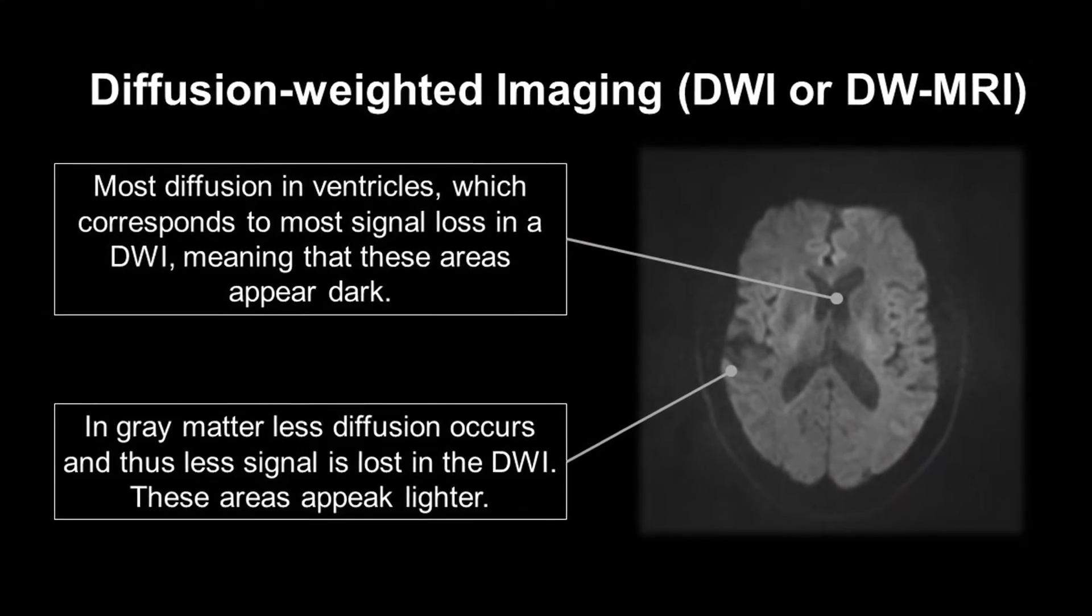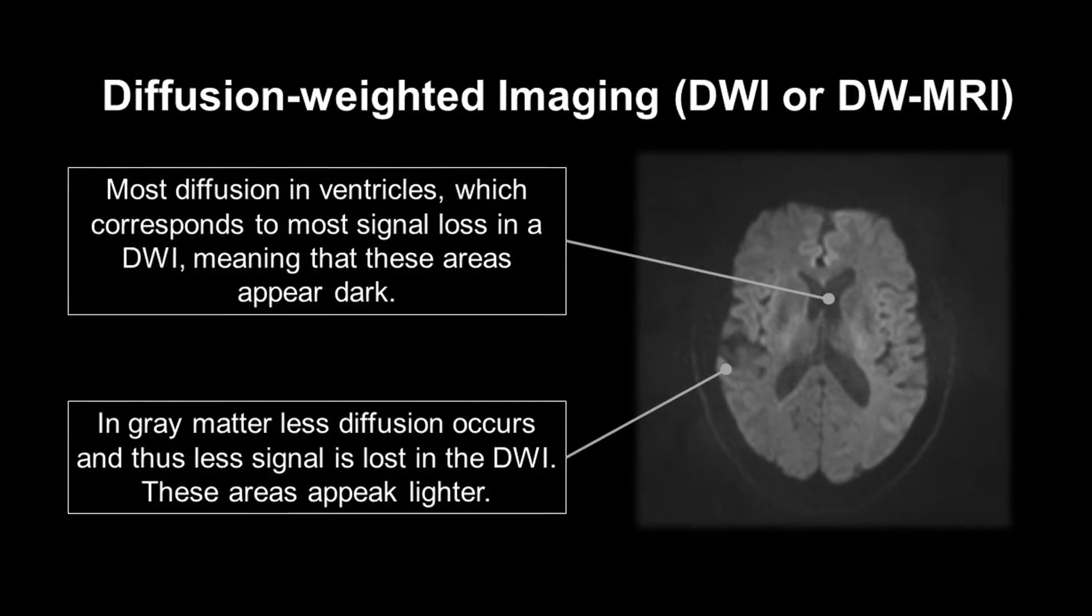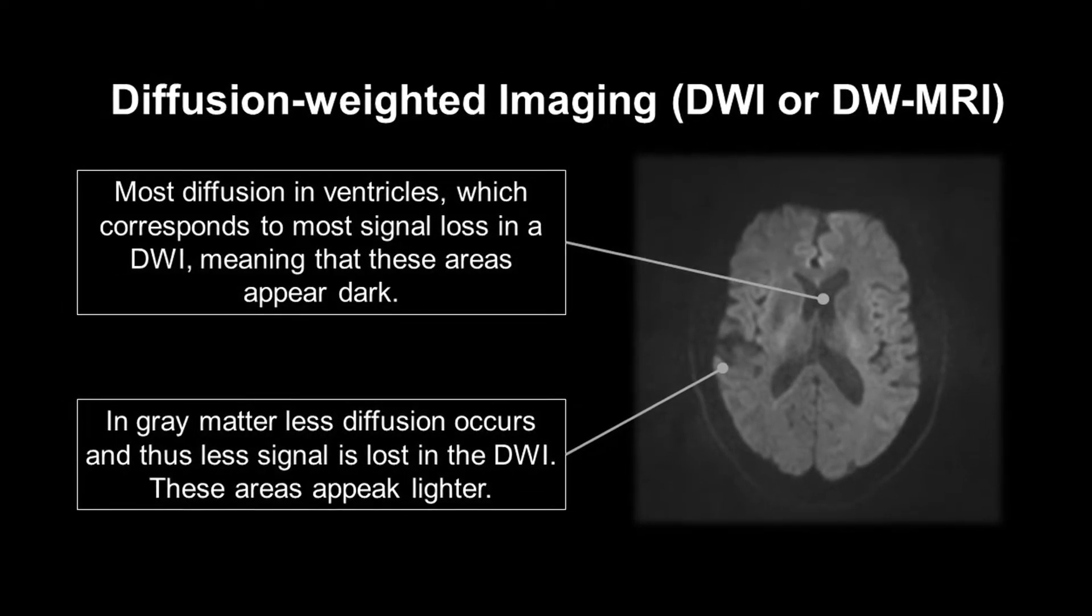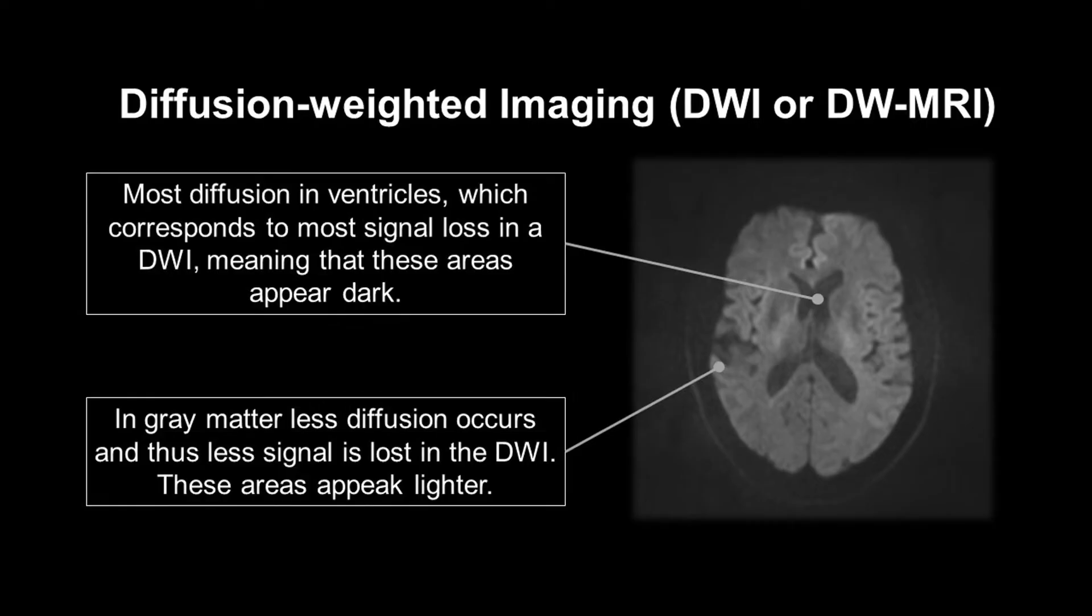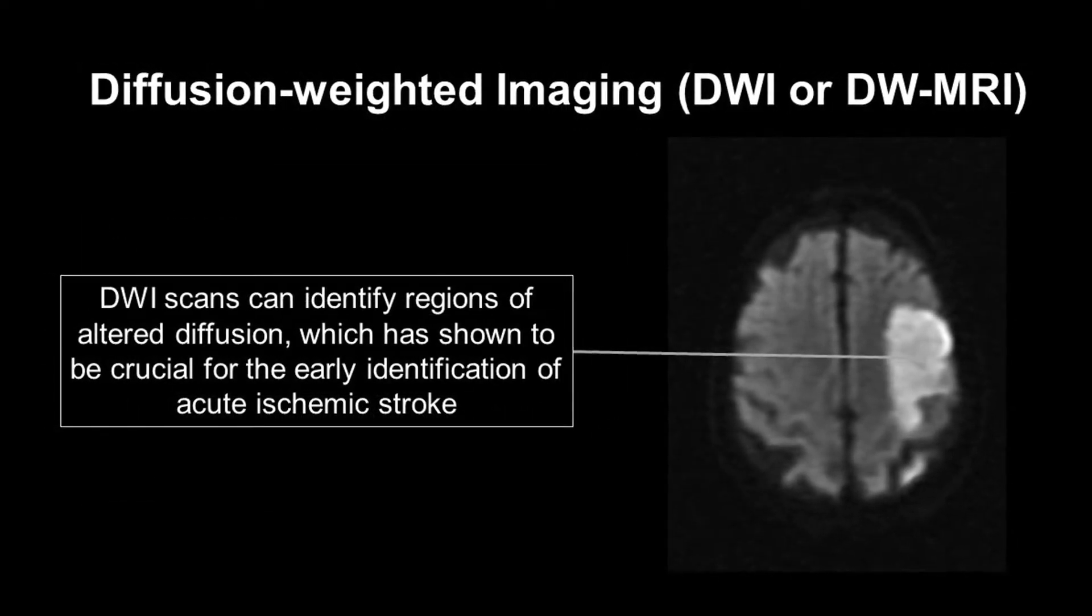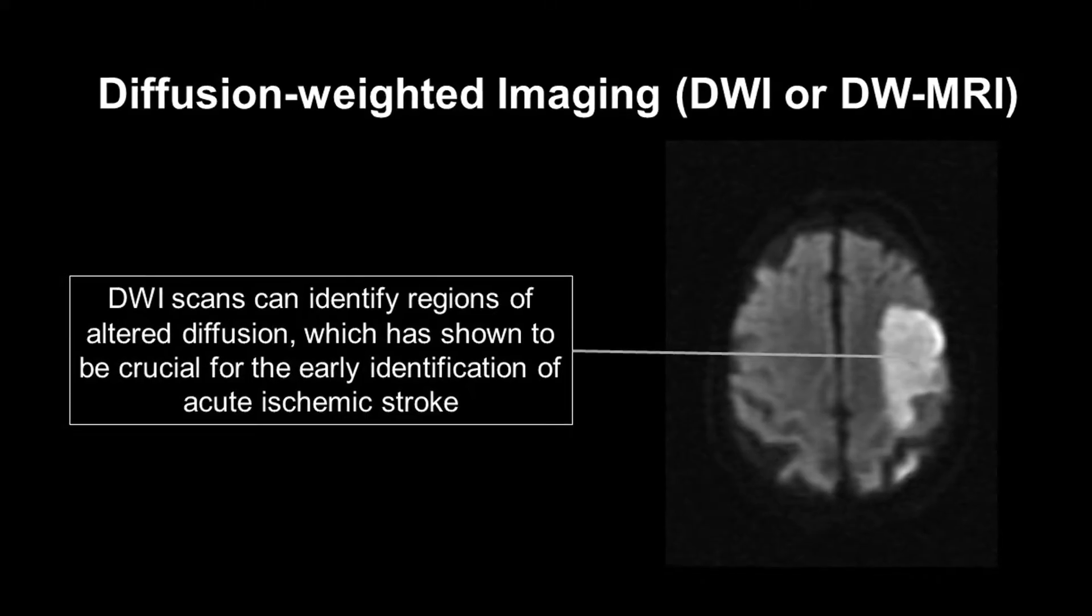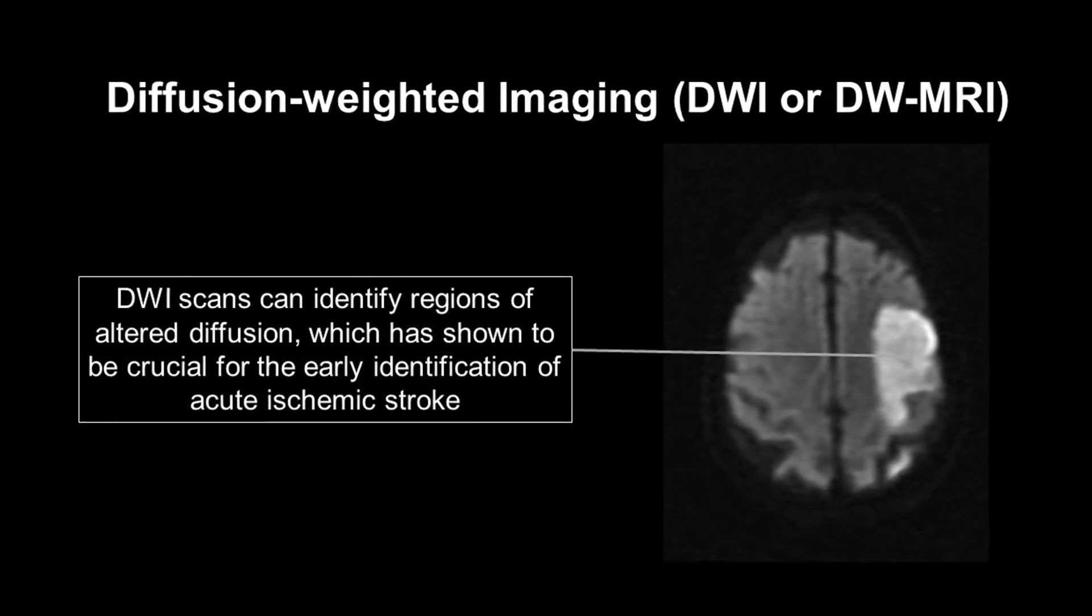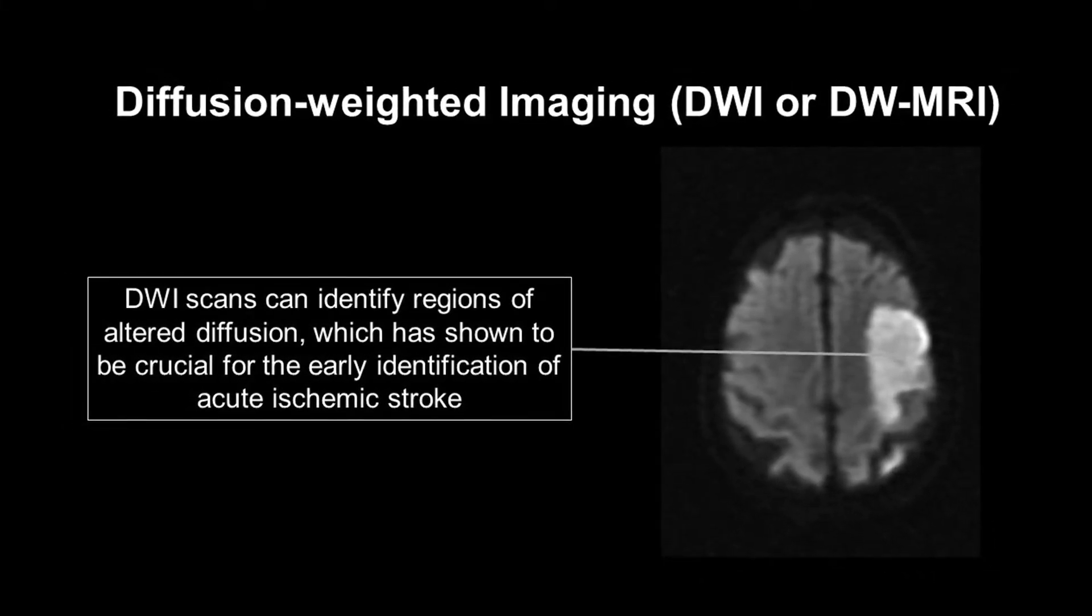But in other places, where protons are more restricted in their movement, such as grey matter, signal will be higher. Everything we have explained up until now describes diffusion-weighted imaging. It is used as a tool to find areas with limited water diffusion, which can be indicative of neurological conditions such as a stroke.